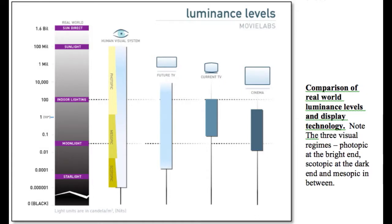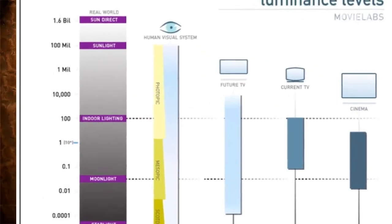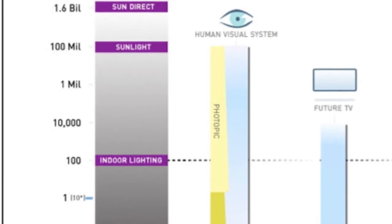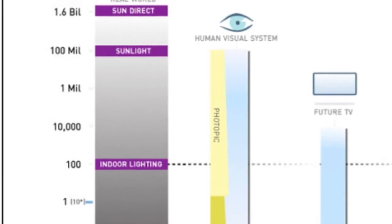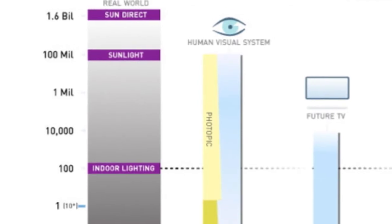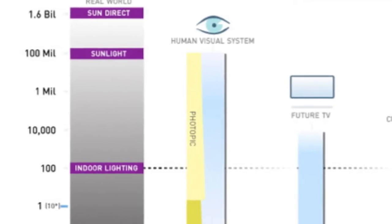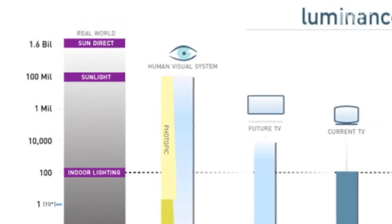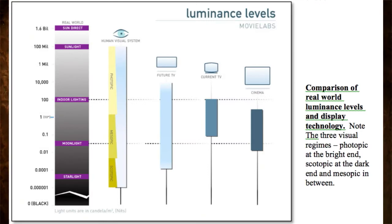If you look all the way on the left side, you'll see the range of light in our environment, ranging from starlight all the way up to staring directly into the sun — which we don't recommend. Sunlight itself is on the order of 100 million candelas per meter squared, a measure of luminance often called nits. Looking at the range that television has covered, from photopic all the way down to scotopic — which is essentially black and white vision with just your rods active — you can see that current TV covers a very, very small fraction of that.